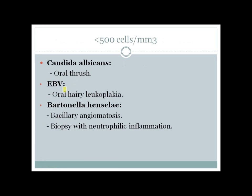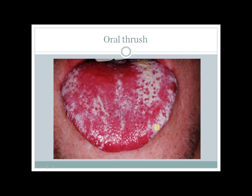Now let's discuss infections associated with lower CD4 counts. If CD4 is just below normal — less than 500 cells per cubic millimeter — the patient can have infection with Candida presenting as oral thrush, infection with Epstein-Barr virus leading to oral hairy leukoplakia, or infection with Bartonella henselae leading to bacillary angiomatosis. Biopsy from bacillary angiomatosis shows neutrophilic inflammation.